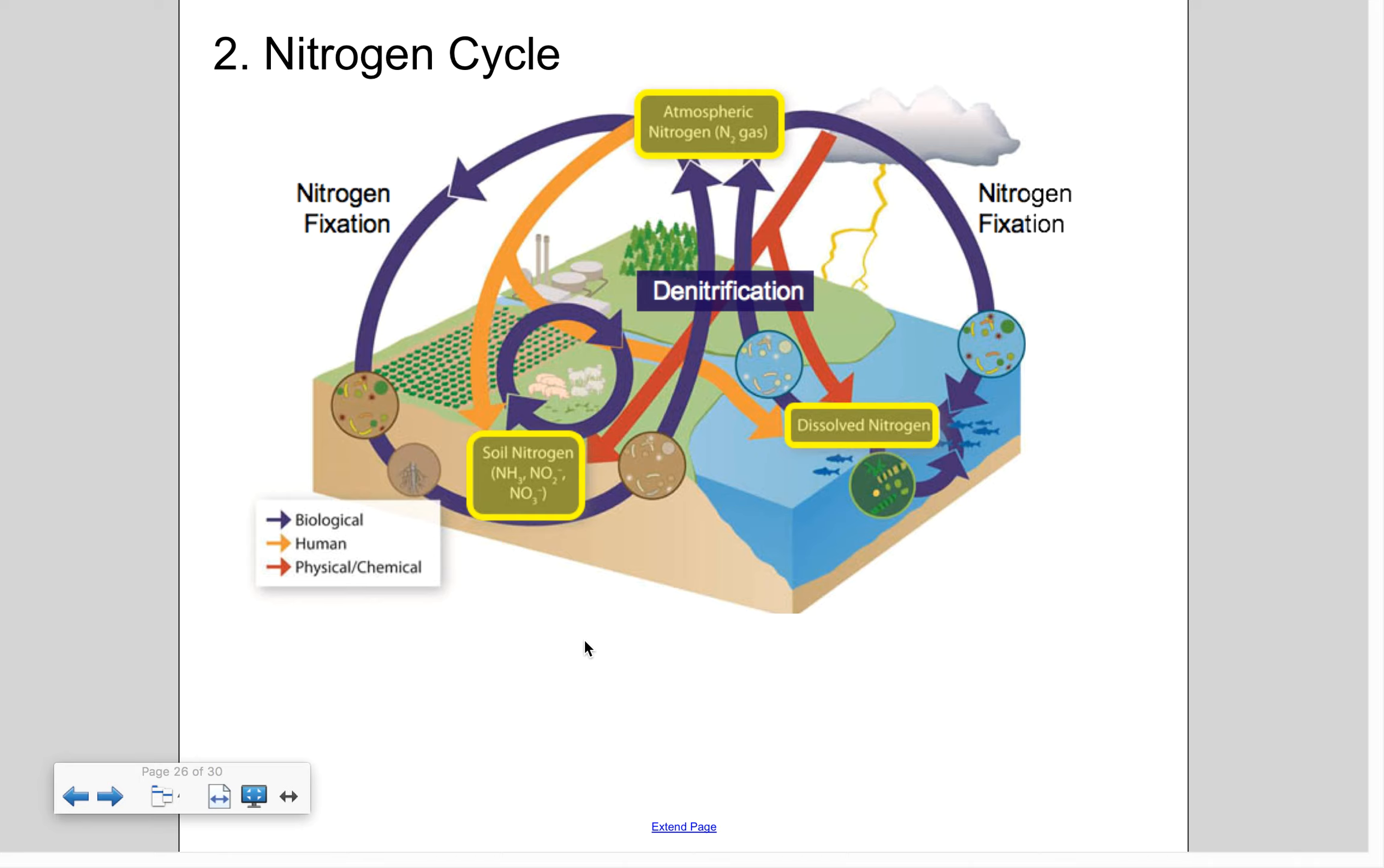So nitrogen is a pretty essential element for life, and most of the nitrogen that's found on Earth is in the atmosphere as gas. It makes up about 78% of the air we breathe. However, it's useless in this form for us. We can't breathe in this nitrogen and use it to make proteins or DNA. We can't use N2 gas. We actually have to use a different form of nitrogen.